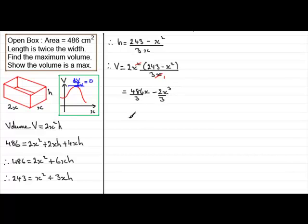Now, 3 goes into 486. It goes in exactly 162 times. So that's 162x. And then we'll just leave this term on the end here as 2 thirds x³. Right. Now we've got this far, we now need to find out what the gradient is at any point on this curve of v equaling 162x minus 2x³ over 3. Now I know that this curve doesn't look like this, but this is just here, just to give you an idea.